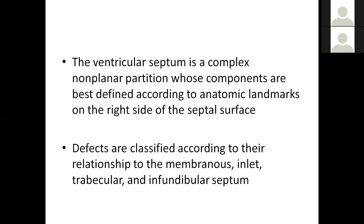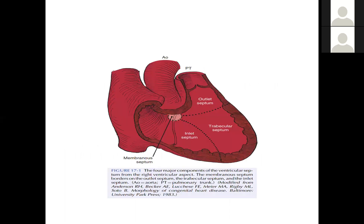The ventricular septum is a complex structure whose components are defined by anatomical landmarks. Generally, it is divided into membranous and trabecular parts. This diagram shows the membranous and trabecular portions of the ventricular septum.